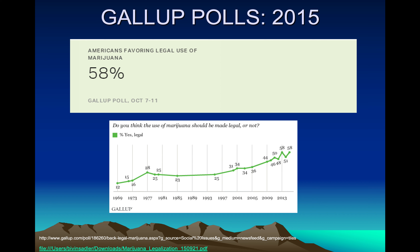Back in 2015, we were looking at this statistic and found that 58% of the sample taken by Gallup favored legal use of marijuana. That was back on October 7th through the 11th of 2015. The article gave a time series plot showing that over time, the trend of favoring legal use of marijuana has increased. But looking at that, that's over a sample.